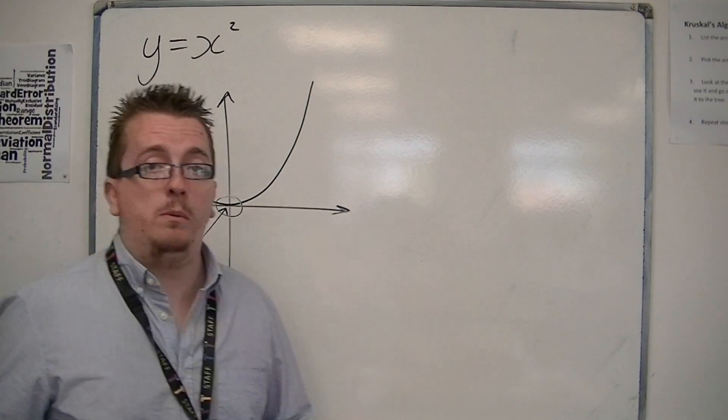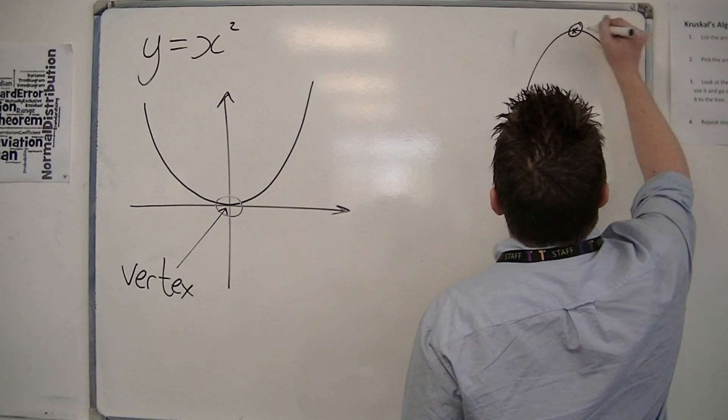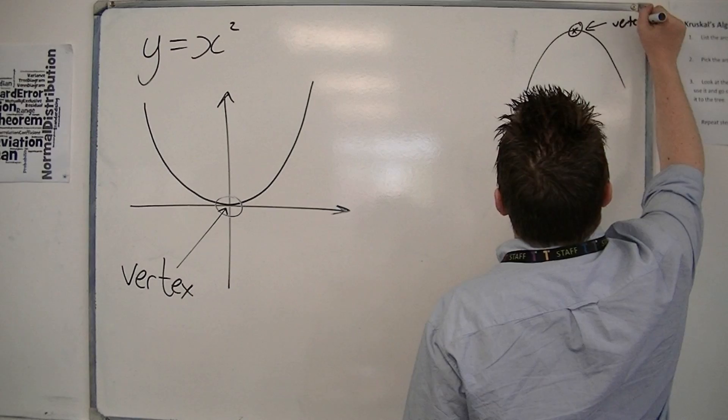Or I guess the maximum point. If the curve is going up that way, then this point here, the highest point, is also known as the vertex.